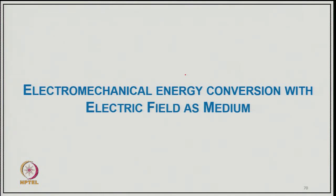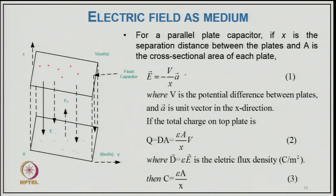Electromechanical energy conversion with electric fields as a medium is also possible, though most machines are based on electromagnetic fields because electromagnetic fields can store much higher energy at the same level of flux density. The electrostatic motor from University of Wisconsin is one example. For a parallel plate capacitor, if x is the separation distance between plates and A is the cross-sectional area, the electric field intensity is E = −(V/x)·â, where V is the potential difference and â is the unit vector in the x direction. The total charge on the top plate is q = εA·V/x, where ε is the permittivity, giving capacitance C = εA/x.